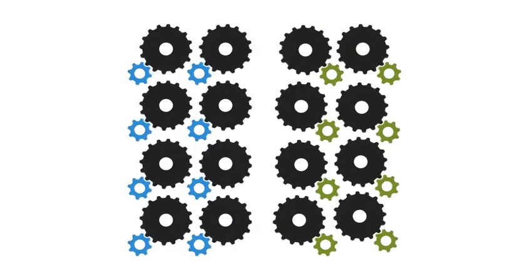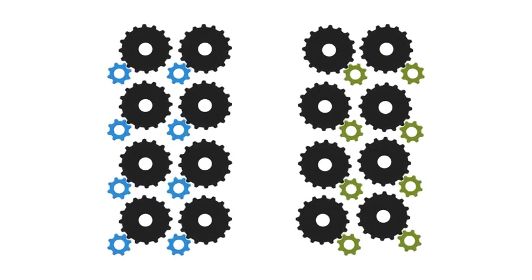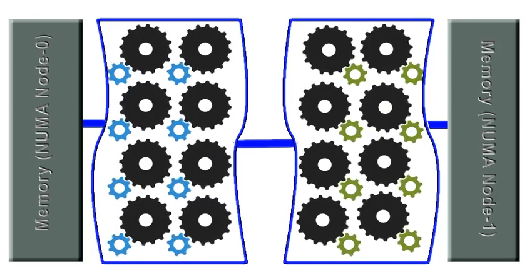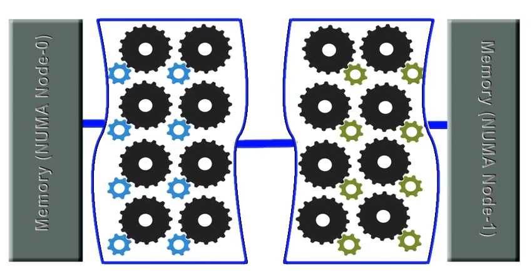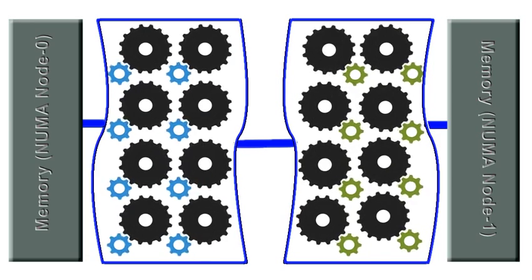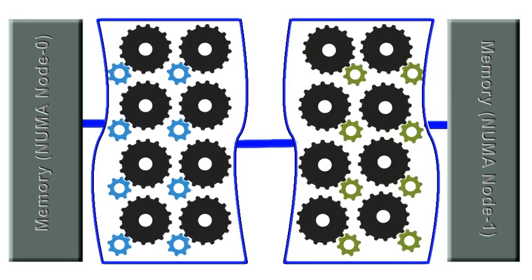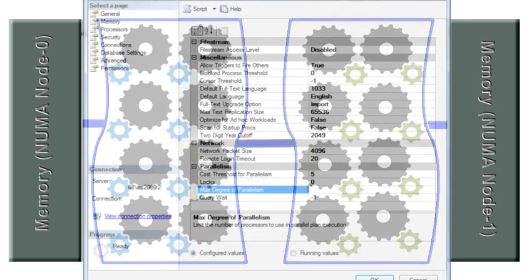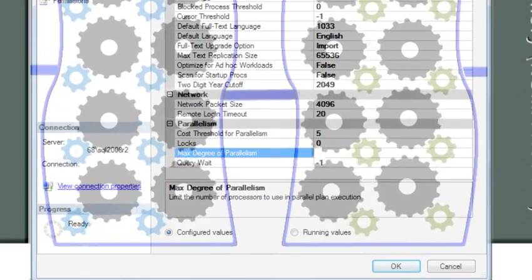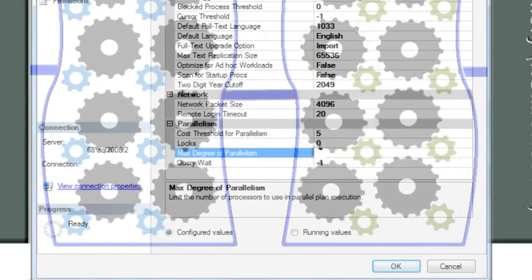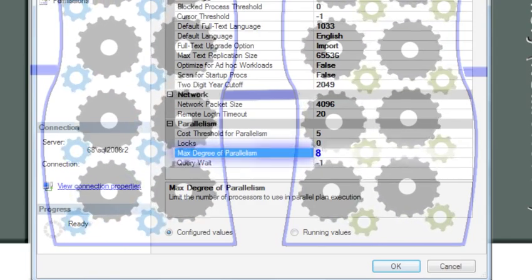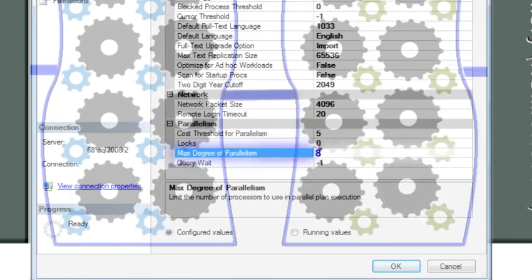When multiple NUMA nodes are configured, processors on a single NUMA node work with their own memory, and working with a single group of processors and its relevant memory is far more efficient compared to involving processors and memory of another NUMA node on the same box. Therefore, the max degree of parallelism for a box where multiple NUMA nodes are configured should be equal to the number of processors on a single NUMA node.